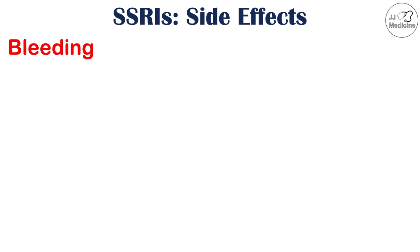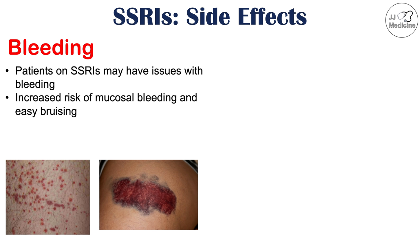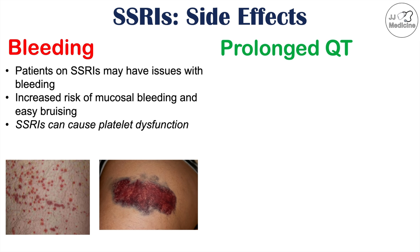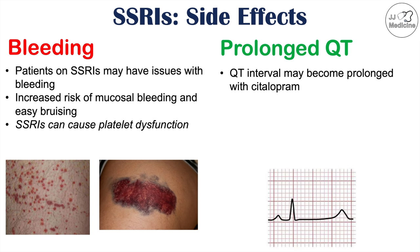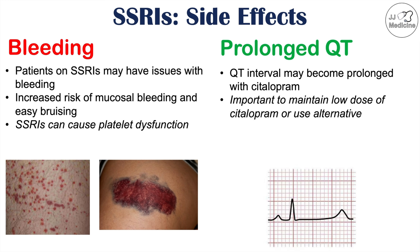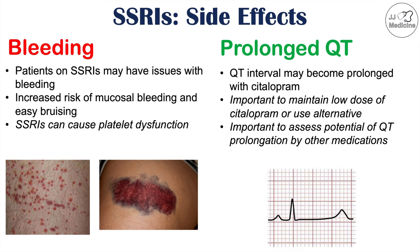Issues with bleeding can also occur with SSRI use — patients may have an increased risk of mucosal bleeding and easy bruising due to platelet dysfunction caused by SSRIs. Some SSRIs can also lead to prolonged QT interval, noted on an ECG. The QT interval may become prolonged with citalopram use — this is not associated with escitalopram, but citalopram specifically. Because of this, it's important to maintain a low dose of citalopram or use an alternative SSRI, and to assess potential QT prolongation by other medications, as prolonged QT can increase the risk of torsades de pointes.